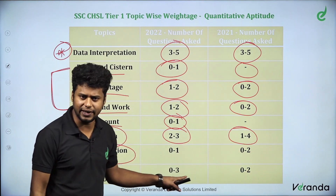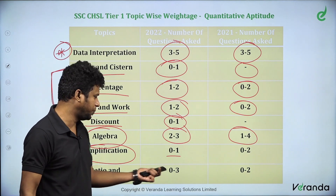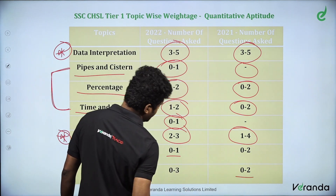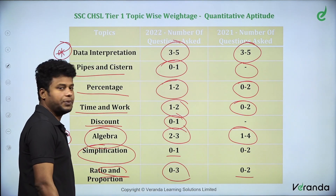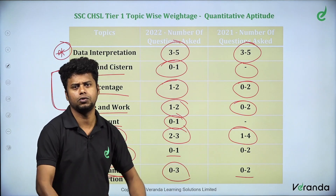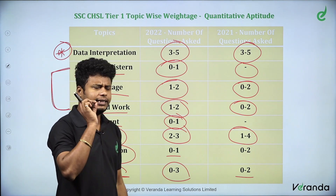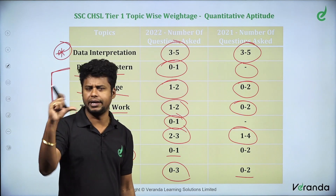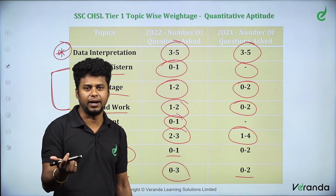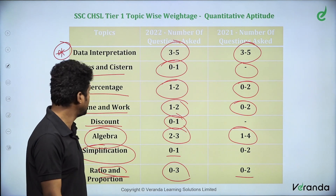Simplification questions — around 0 to 1 question. That is also a very important topic. For Ratio and Proportion, there are 0 to 2 questions, sometimes 0 to 3 questions. In Ratio and Proportion, there are standard questions — for example, problems involving a number of coins. You can expect around 3 questions in this type.